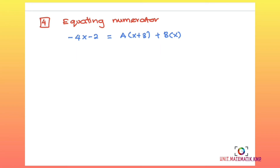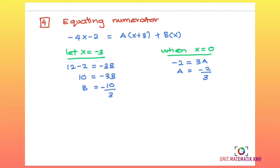After equating the numerators, we find the values of A and B using the substitution method. Substituting x = −3 gives us B = −10/3, and substituting x = 0 gives us A = −2/3.